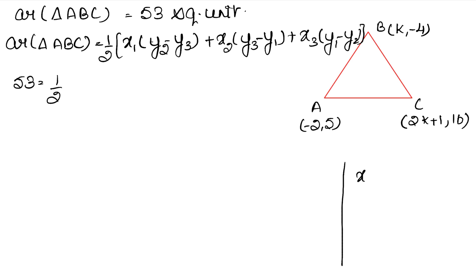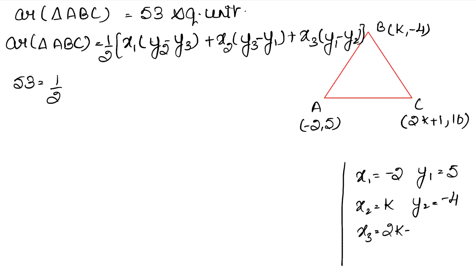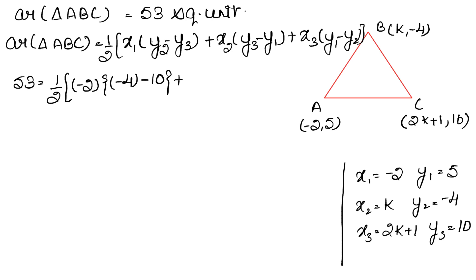अब x1, y1 क्या होते थे? A के coordinates को मैं x1, y1 मानती थी तो minus 2, y1 है 5। x2 क्या होगा? k, B के coordinates, y2 हुआ minus 4। और x3 क्या हुआ? C के coordinates, that is 2k plus 1, और y3 है 10। तो अब values put कर दीजिए: x1 है minus 2, y2 minus y3 है minus 4 minus 10। Plus x2 है k into y3 minus y1 है 10 minus 5। Plus x3 है 2k plus 1 into y1 minus y2 है 5 minus minus 4।